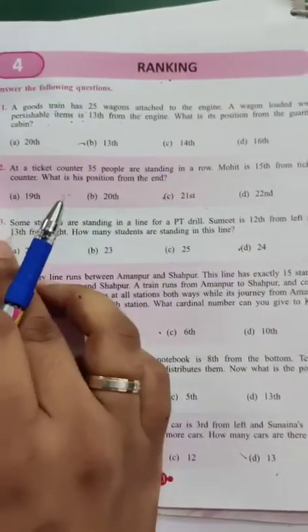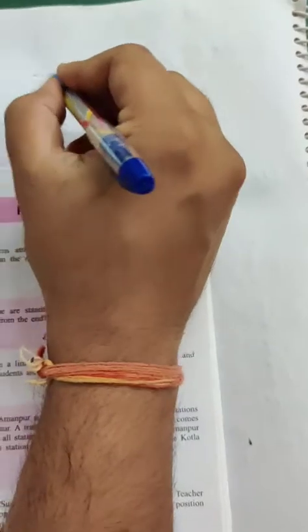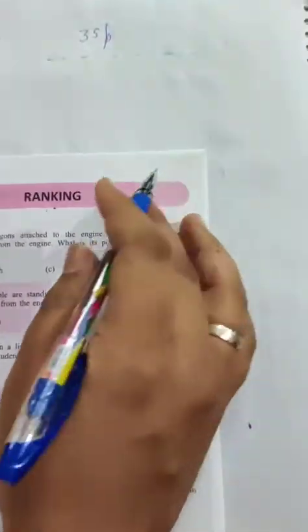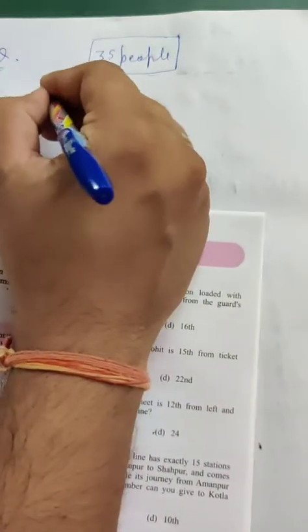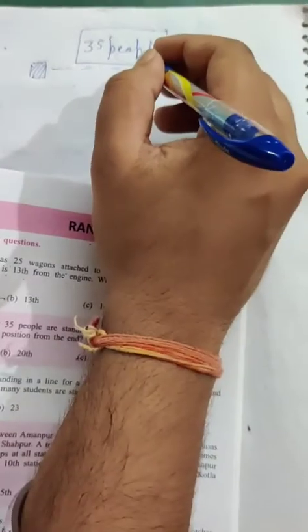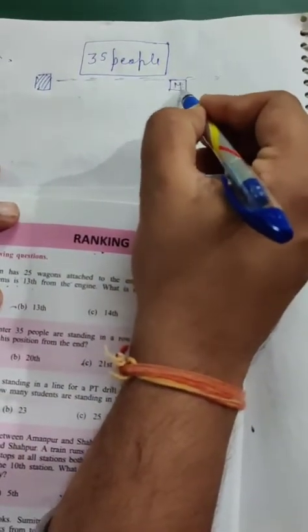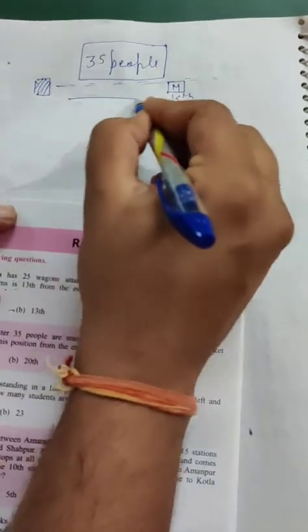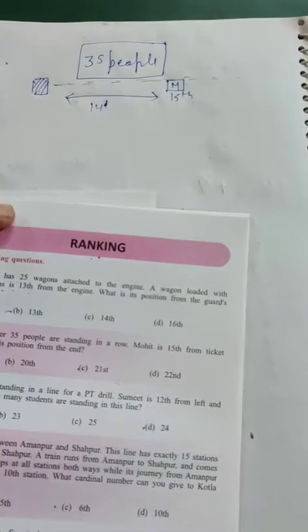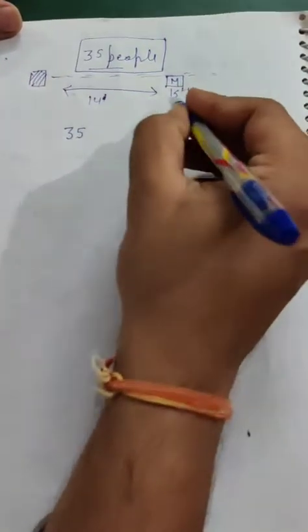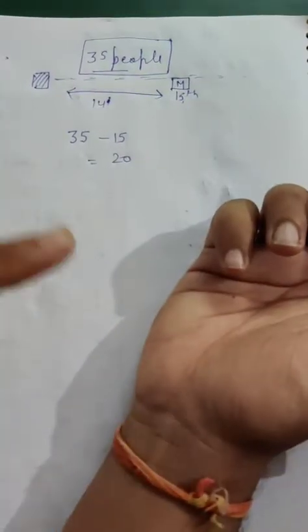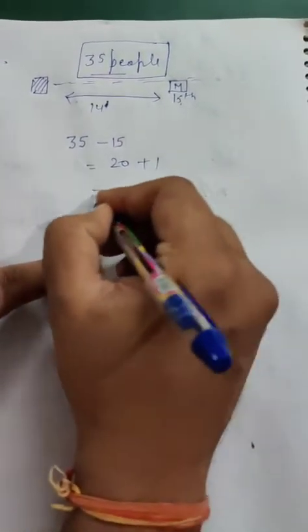See the question. At a ticket counter, 35 people are standing in a row. Mohit is 15th from the ticket counter. This is the ticket counter. M means Mohit, so Mohit is 15th.